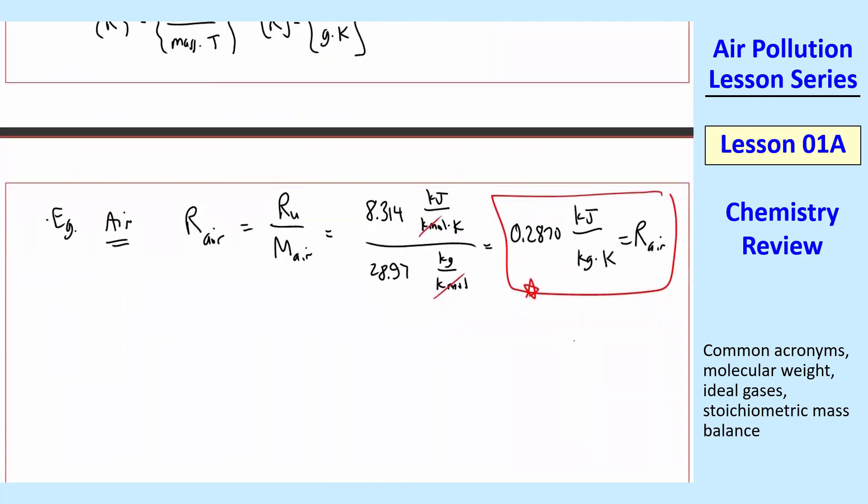And so I just want to make a couple comments here. First of all, some books don't distinguish between Ru and R, and I find that very confusing. So I will always distinguish between Ru when there's a chemical like air. That's the R of that specific chemical. And Ru is universal for all ideal gases.